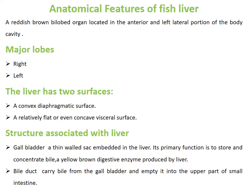The upper surface is concave beneath the diaphragm, and the lower surface is flat and concave, present between the visceral organs. Here are some structures associated with the liver that help it perform its functions, like the gallbladder and bile duct.